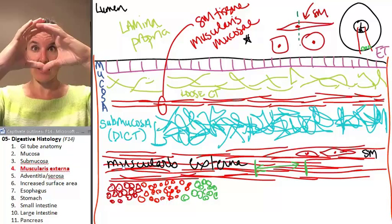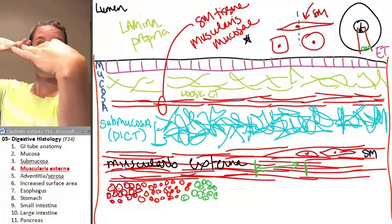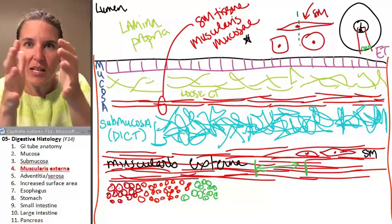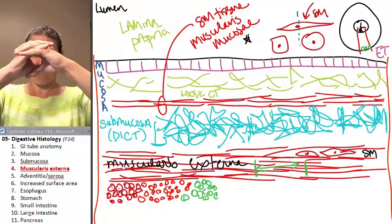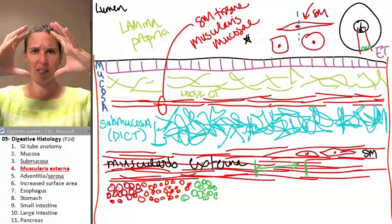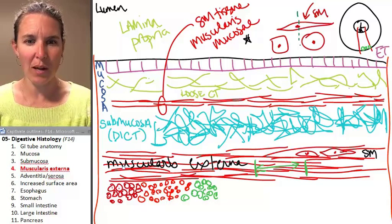Why would you need to have these layers, one of them going like this and one of them going like this so that your tube is actually shortening and lengthening and decreasing in diameter and increasing in diameter? Really? Why would we have that happening?